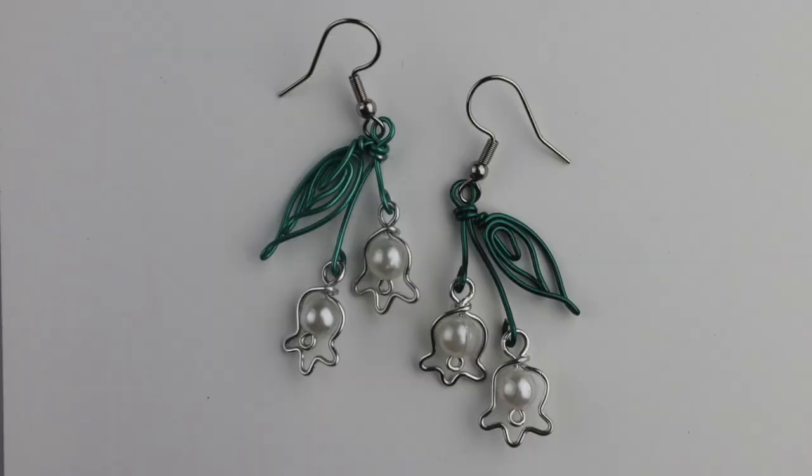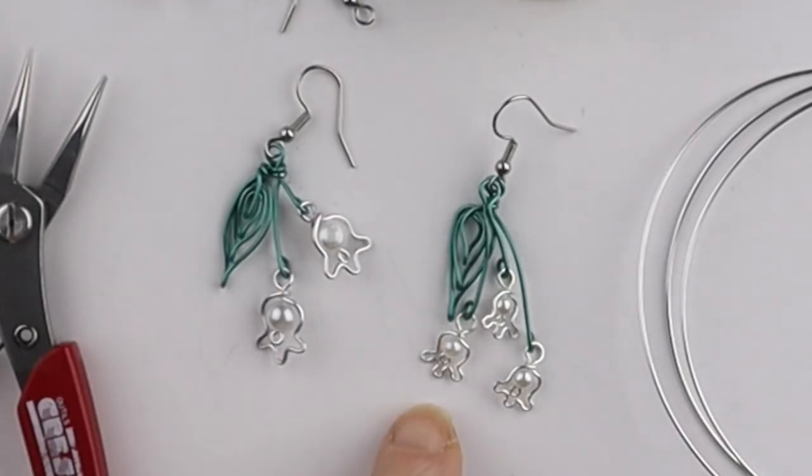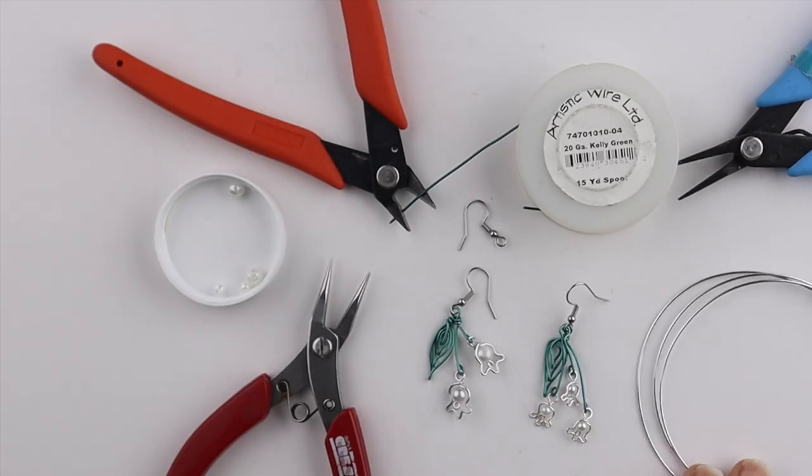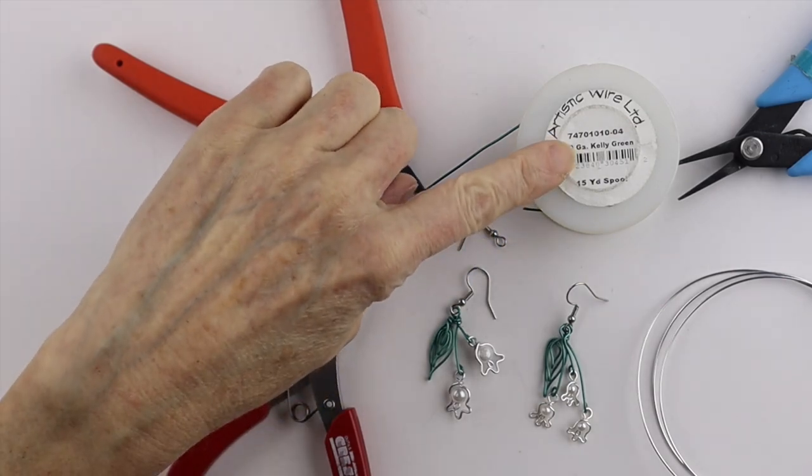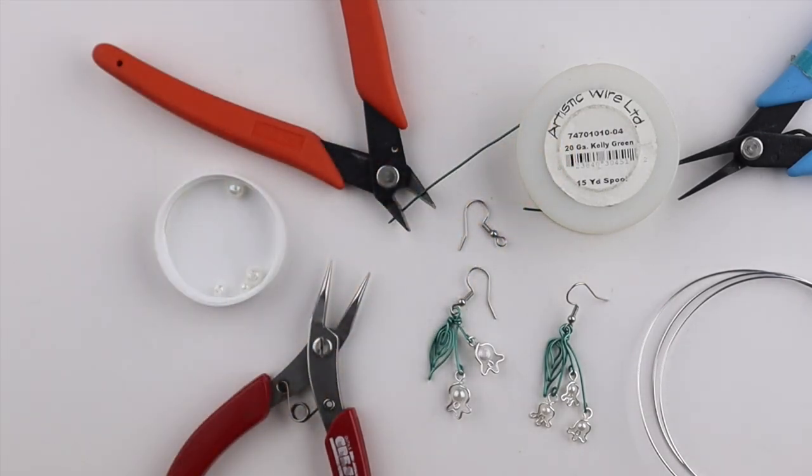Hello LiveWires, Heather Boyd Wire here. Today I have a special request from Stella to make some Lily of the Valley earrings. I've made some with small 4mm beads and some with larger 6mm beads. I'm using 20 gauge wire. I have 20 gauge green wire and I have my tools.